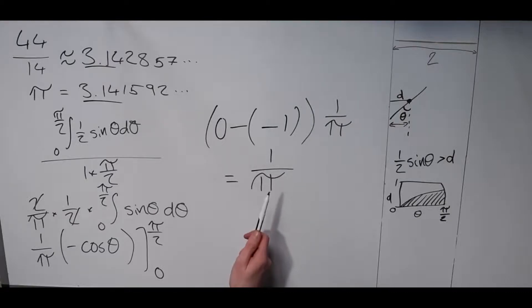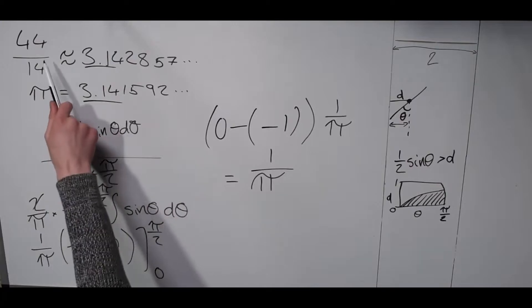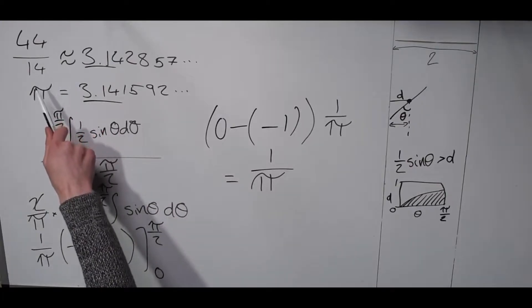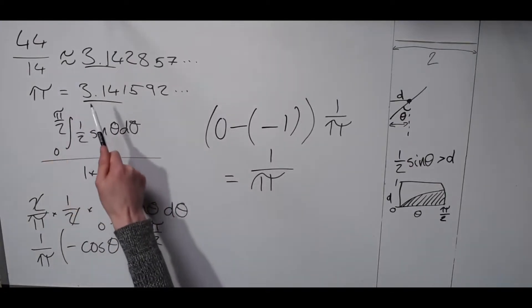So the probability of a needle crossing a line is one over pi, which explains why when we did the reciprocal of that, the total number of needles divided by the ones that cross the line, we get an approximation for pi.